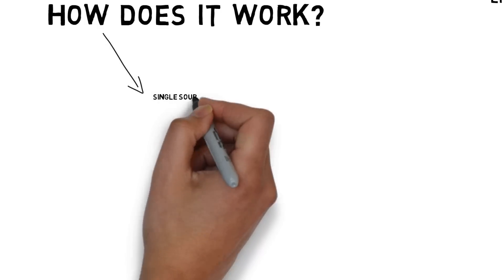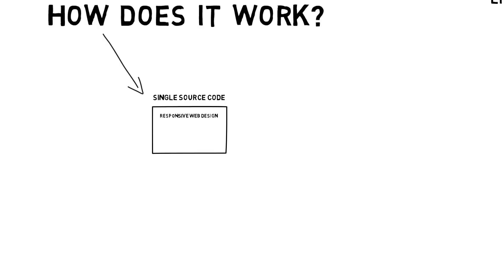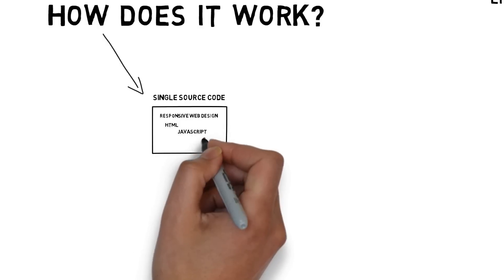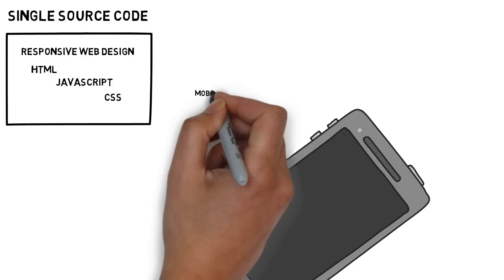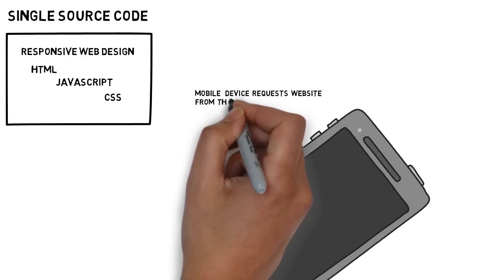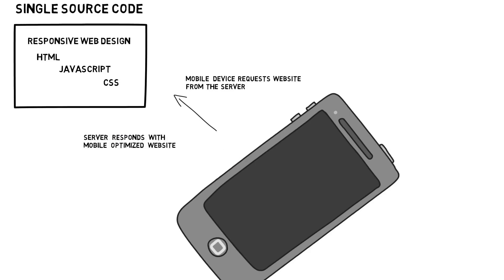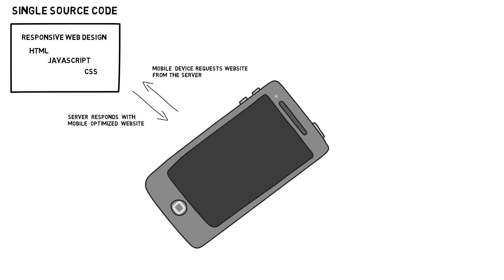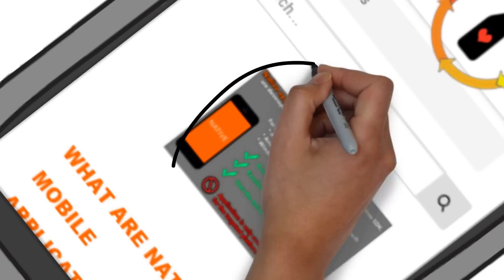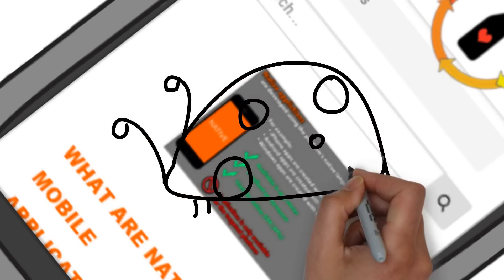How does a web app work? It's a single source code made with a responsive web design, which includes HTML, JavaScript, and CSS. Using Chrome or Safari, the mobile device will request a website from the server, and the server will respond with a mobile-optimized website, such as testaholic.net. The major advantage here is that if there's a bug, it'll be fixable on the server side and can be deployed immediately.